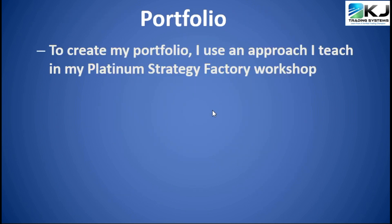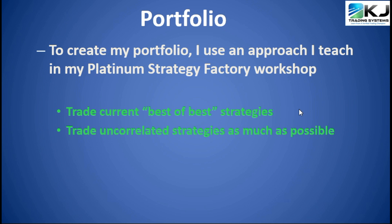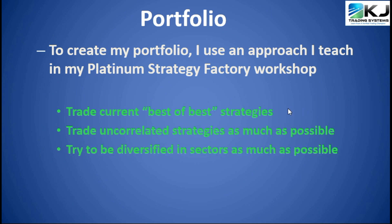When I put this all together to create a portfolio, I use an approach I teach in my Platinum Strategy Factory workshop. What it tries to do is trade only the best-of-best strategies — ones that are currently working well. Those 39 are out of a group of maybe a hundred strategies, and I try to pick the ones that are working well and are as uncorrelated as possible with each other. That's kind of why I look at different sectors. Having some softs, some energies, some metals gives you diversification, and that's really one of the keys to succeeding with this.